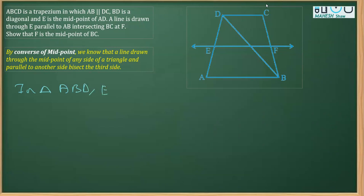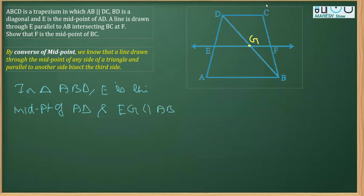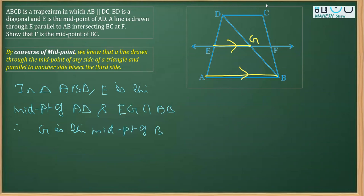In triangle ABD, we know that E is the midpoint of AD. The point where the line EF meets BD — let's call it G — we can say EG is parallel to AB, since parts of parallel lines are parallel. Therefore, by the converse of the midpoint theorem, G is the midpoint of BD.